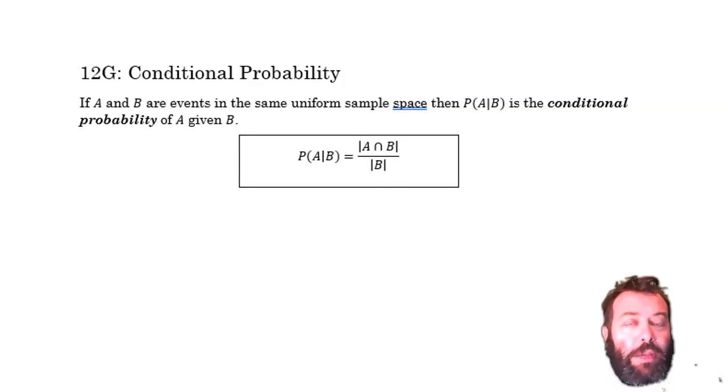Conditional probability: if A and B are events in the same uniform sample space. If you can recall the very first exercise that we did, we defined a uniform sample space as one with equally likely outcomes.